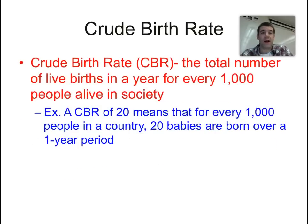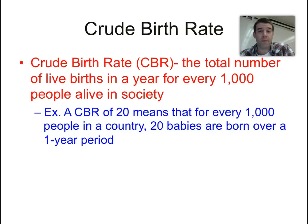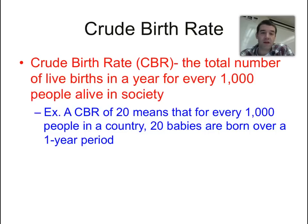The next element that we want to highlight as part of the natural increase rate is the crude birth rate. When we talk about the CBR, or the crude birth rate, we're really just looking at the number of births that are happening per thousand people of a given population. So if there's a thousand people in a given country and the crude birth rate is 20, we're going to see 20 babies born that year out of that group of a thousand people.